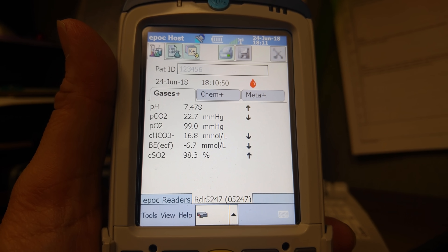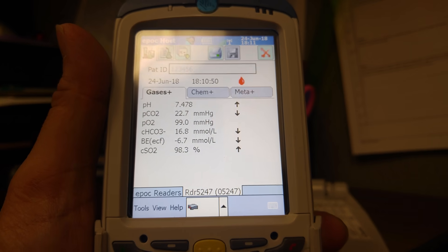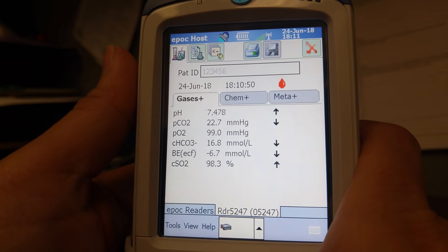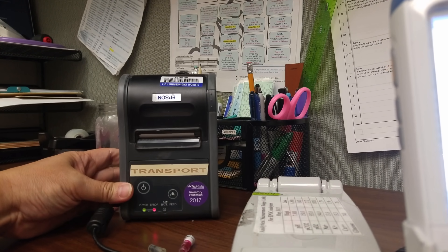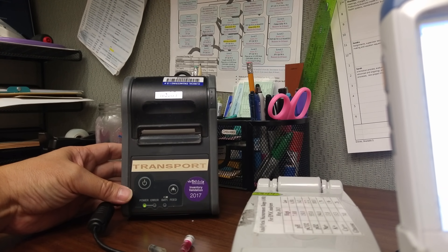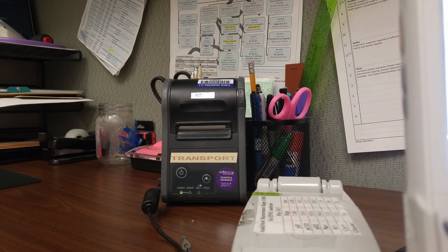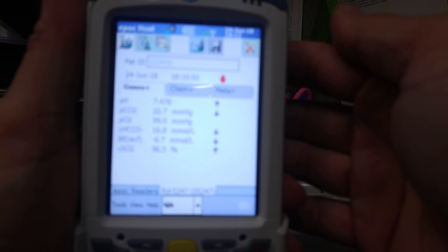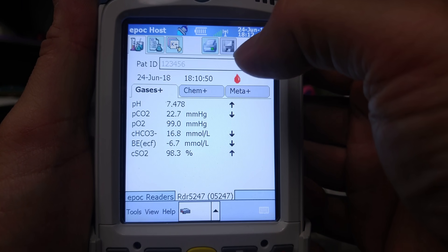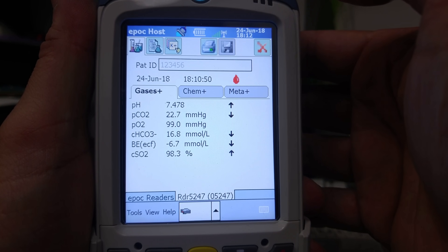So there's your result. So now you can also print this result out. You can turn it on, and on the machine, on the monitor, there's a printer icon. Press that printer icon.